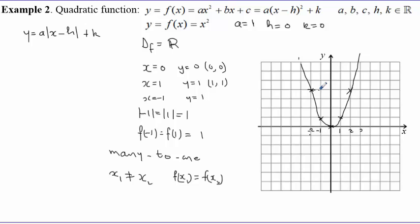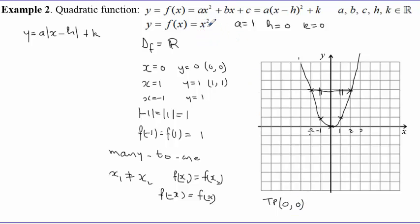We can observe that because f(-x) = f(x), the graph is symmetric around the y-axis. The distance from the left is equal to the distance on the right. From the left, the function is decreasing, it has a turning point, and that turning point is exactly at (0, 0). The parent function shows us this, and then it develops symmetrically around that point.